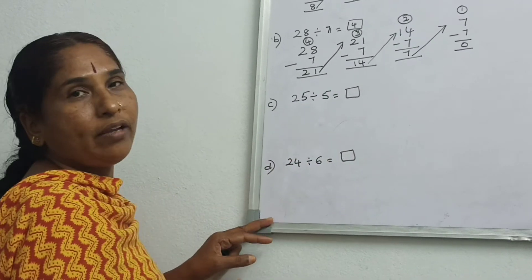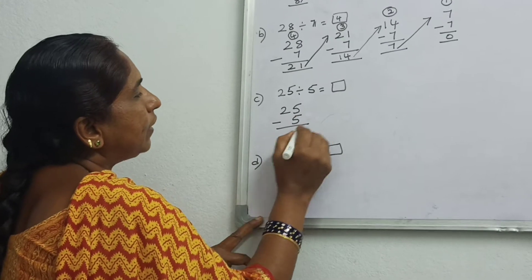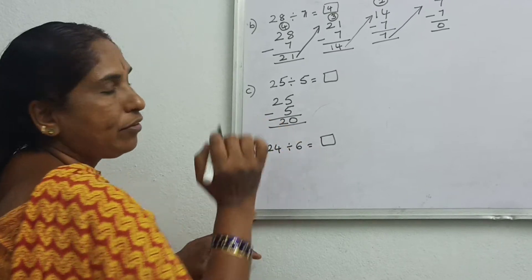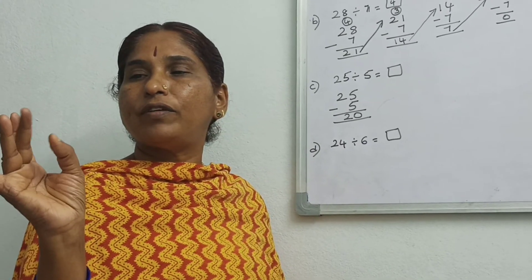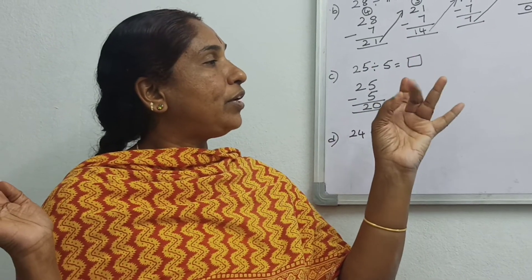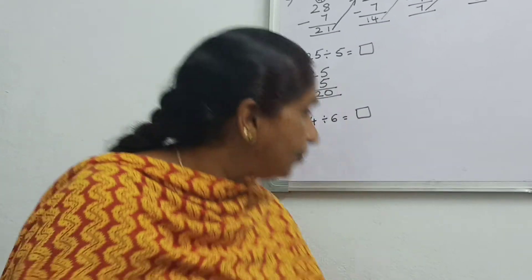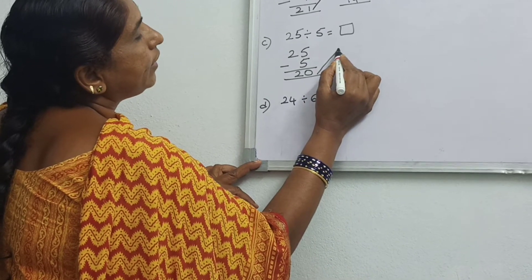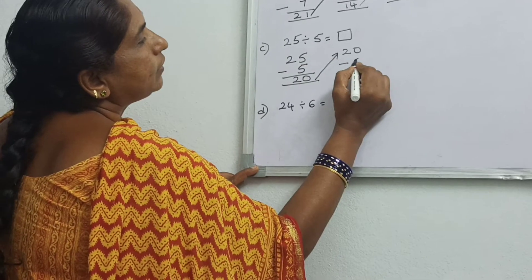So now again: 25 divided by 5. So 25 is the dividend, minus 5 — 5 is the divisor. 25 minus 5 is equal to 20. Take 20. Again, you have to subtract with 5. The divisor is 5.